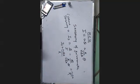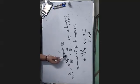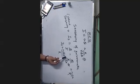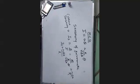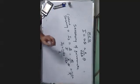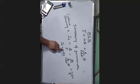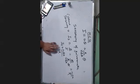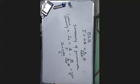To increase current sensitivity, you need to increase the number of turns, increase the magnetic field, increase the area of the coil, and decrease the spring constant k. The current sensitivity formula is NBA by k.